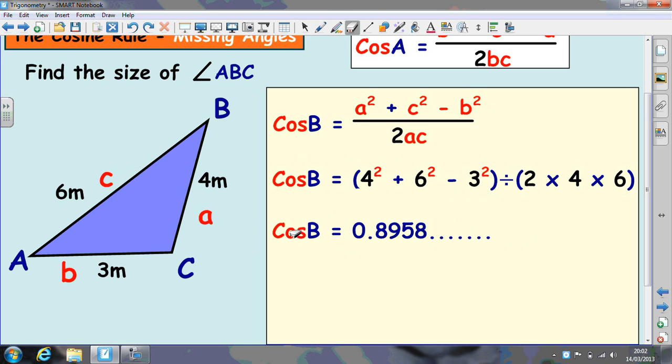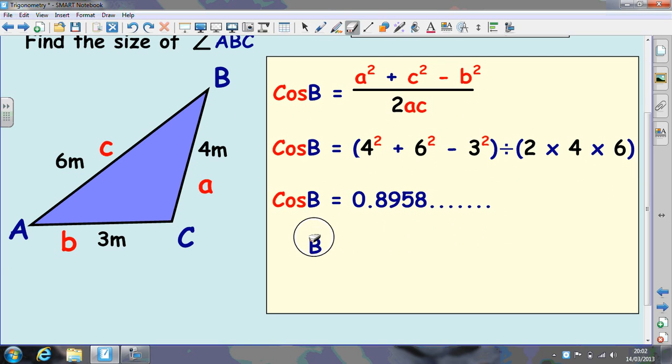Now, to undo cos, you inverse cos to work out the angle. This is not that angle. Some people leave this answer, 0.8958, that angle is not 0.89 degrees. So inverse cos, I would leave it in your calculator and just inverse cos, and you get 26.4 degrees.